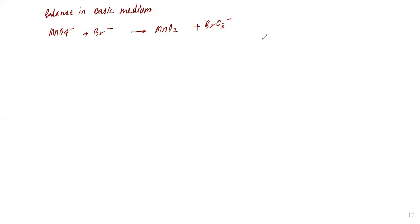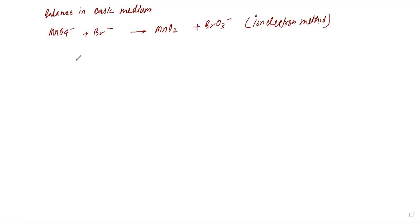Okay, firstly I am going by the ion electron method, then I will teach you another method — the oxidation number method. The oxidation number method is more or less easy. I was solving all the examples one by one and found that most of the ones I could do, but this one I could not. Not a problem.